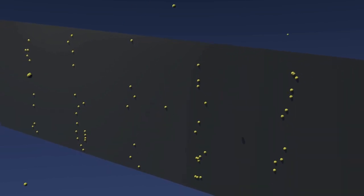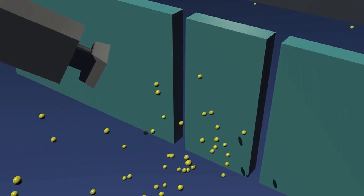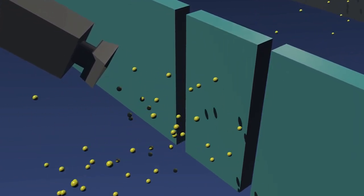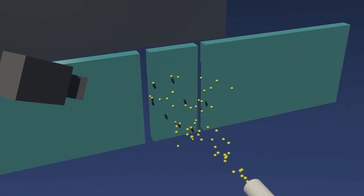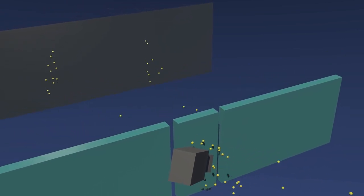This time we'll put a tiny detector, like a little camera, pointing at the slits. We should be able to see which slit an electron passes through: one, the other, or both. When we look at the slits, we don't get an interference pattern on the screen.